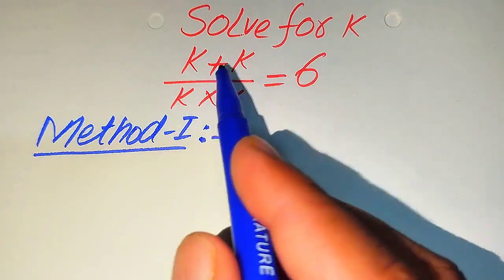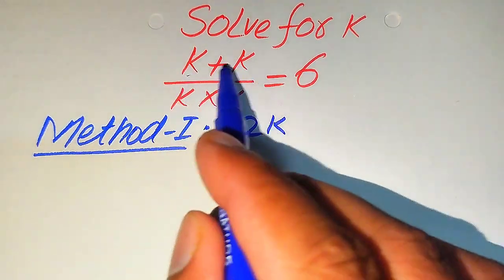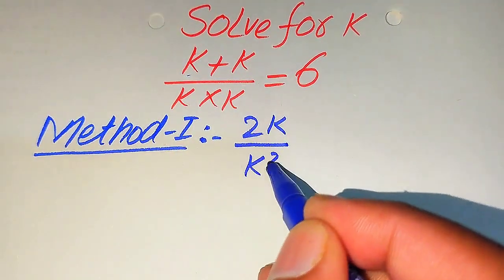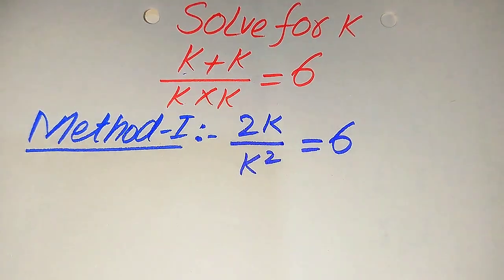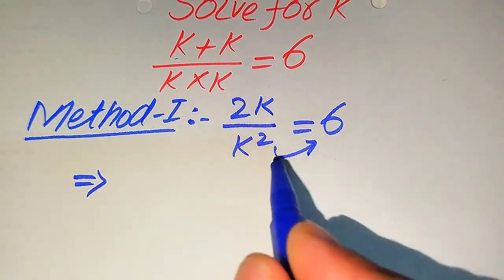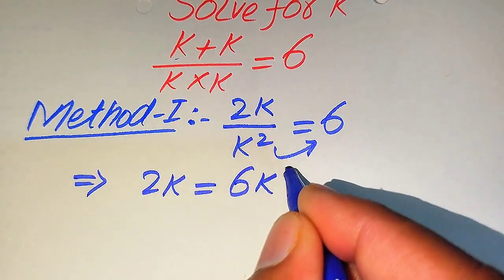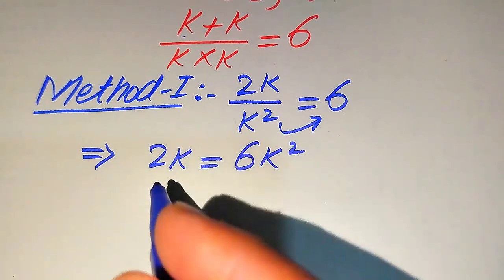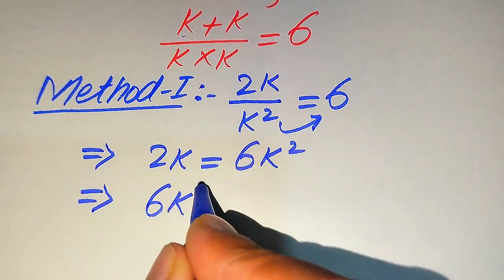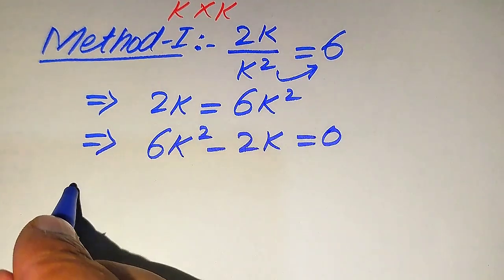In the first method, these are two variable terms added to each other. When you add two variable terms, we add the coefficients. The coefficients of both terms are one, so it becomes 2k divided by k multiplied by k, which becomes k squared, and this equals 6. In the next step we move k squared to the right hand side — since it is dividing, when moved it multiplies by 6 — giving 2k equals 6k squared. Moving 2k to the right hand side gives 6k squared minus 2k equals 0.